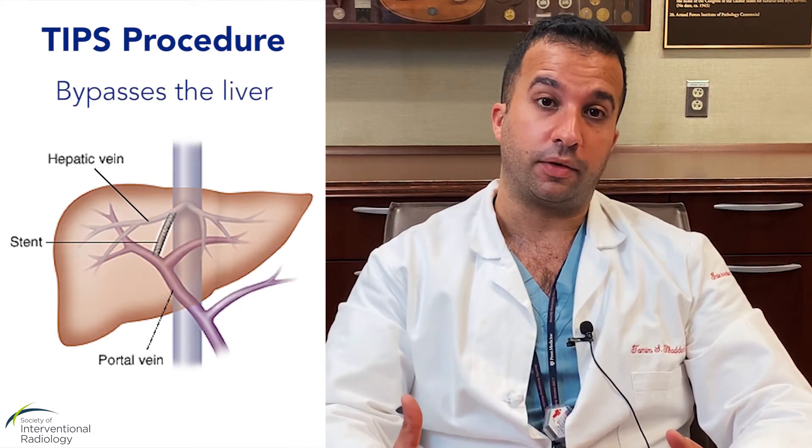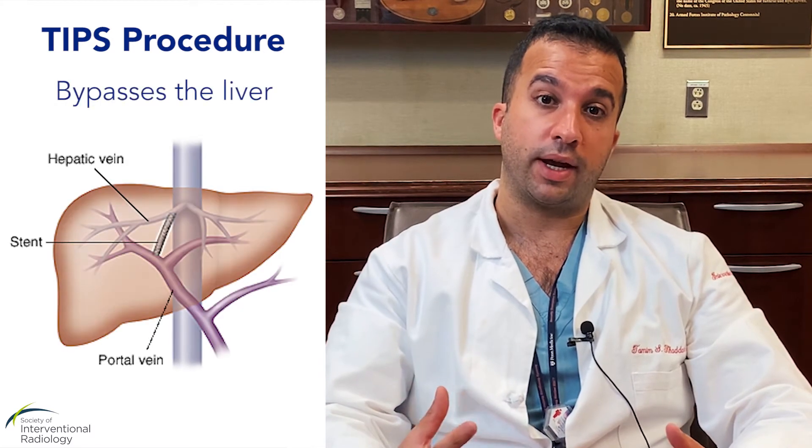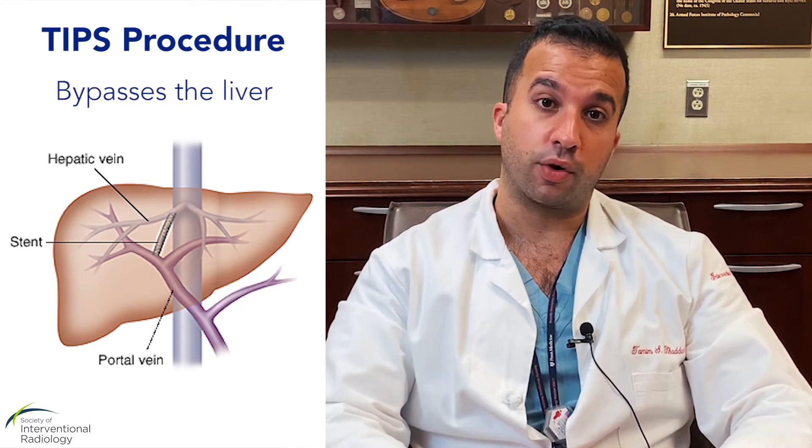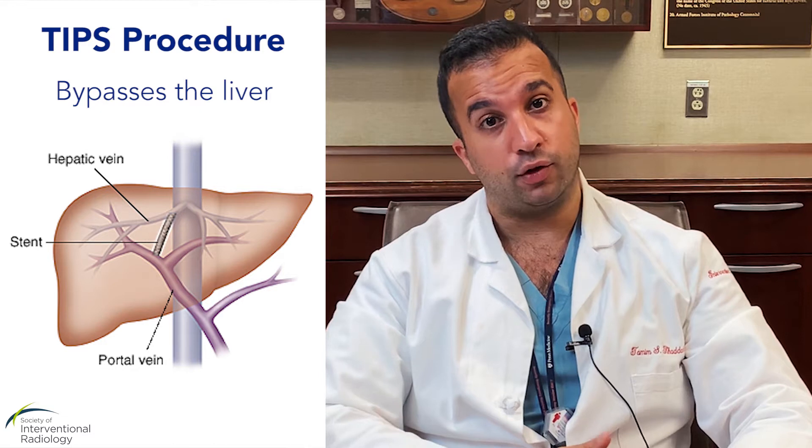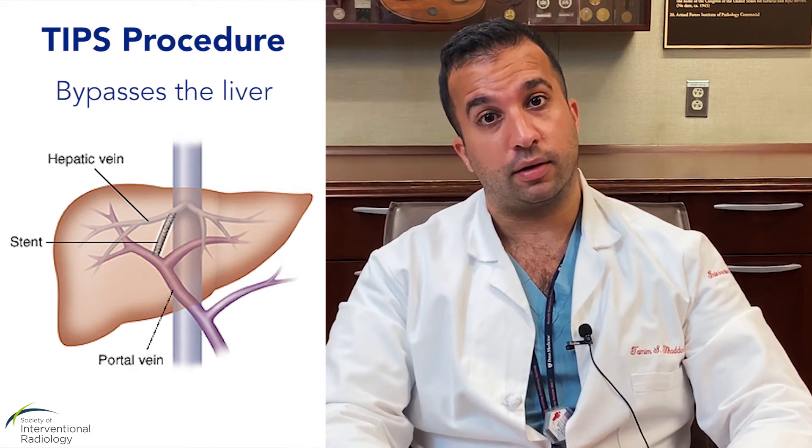A TIPS procedure, also known as a transjugular intrahepatic portosystemic shunt placement, is a procedure where we bypass the cirrhotic liver through a connection between the portal vein and the normal vein that drains the liver.